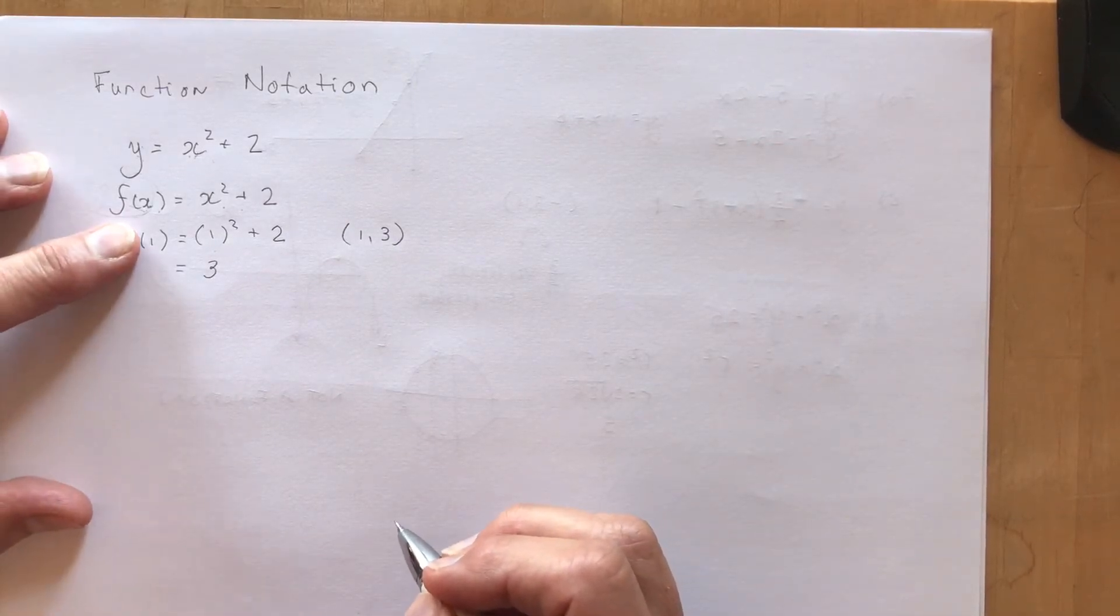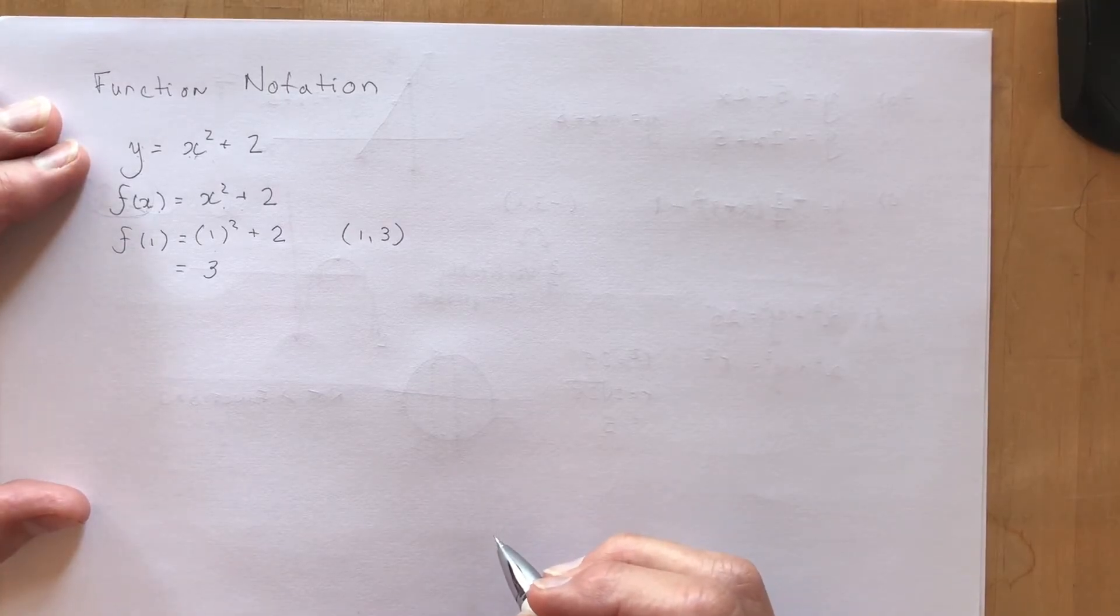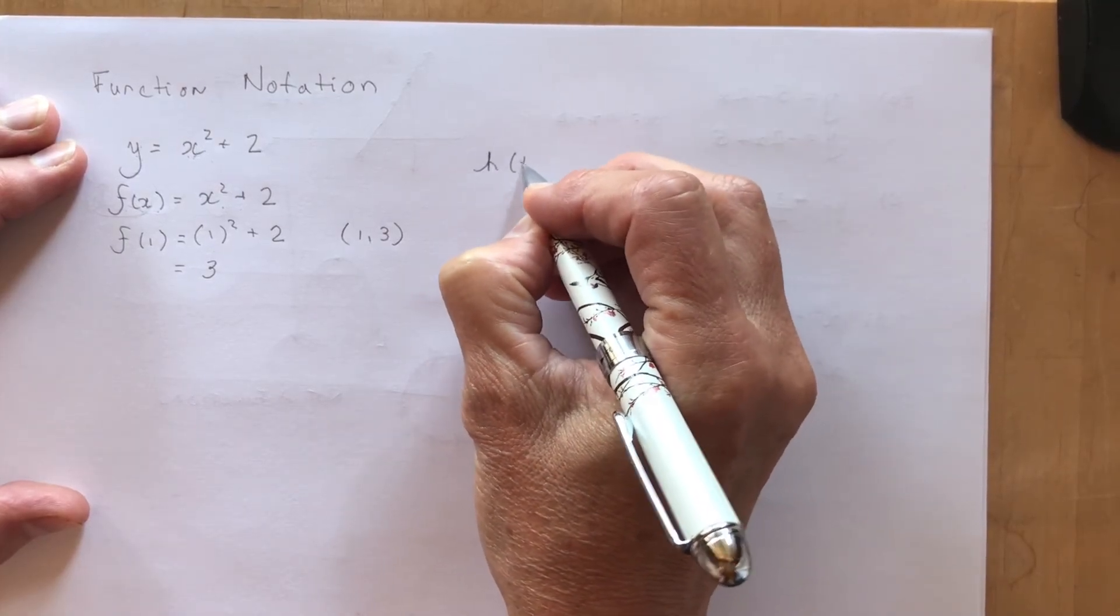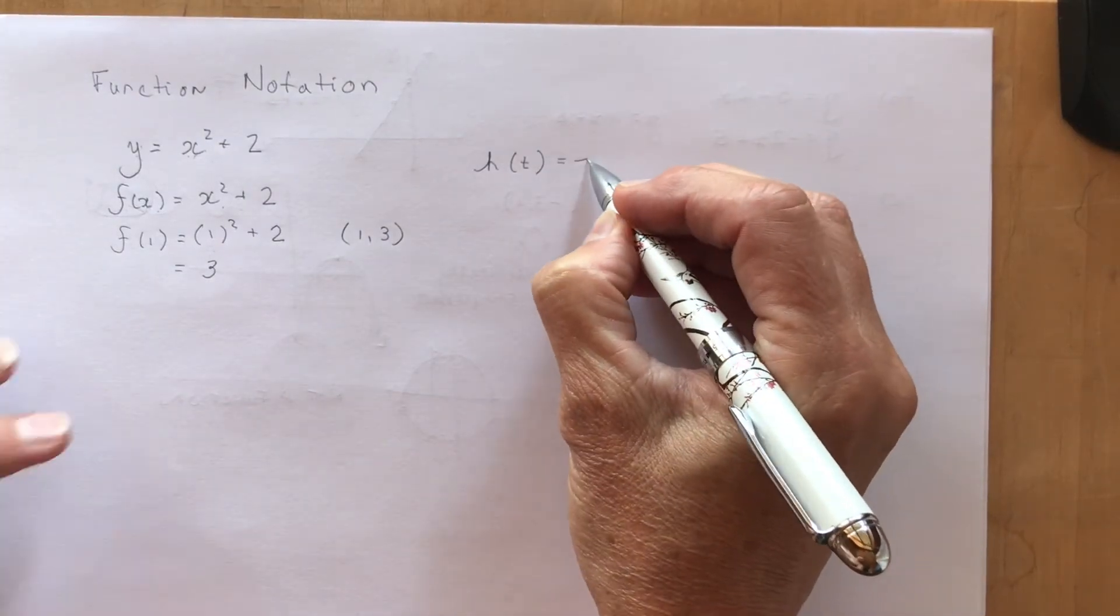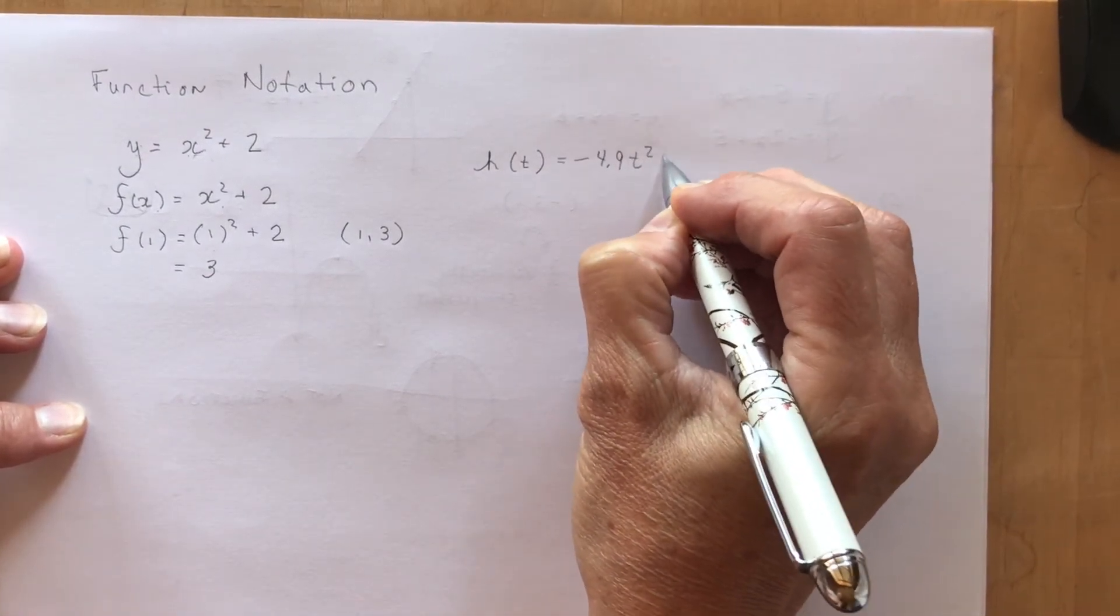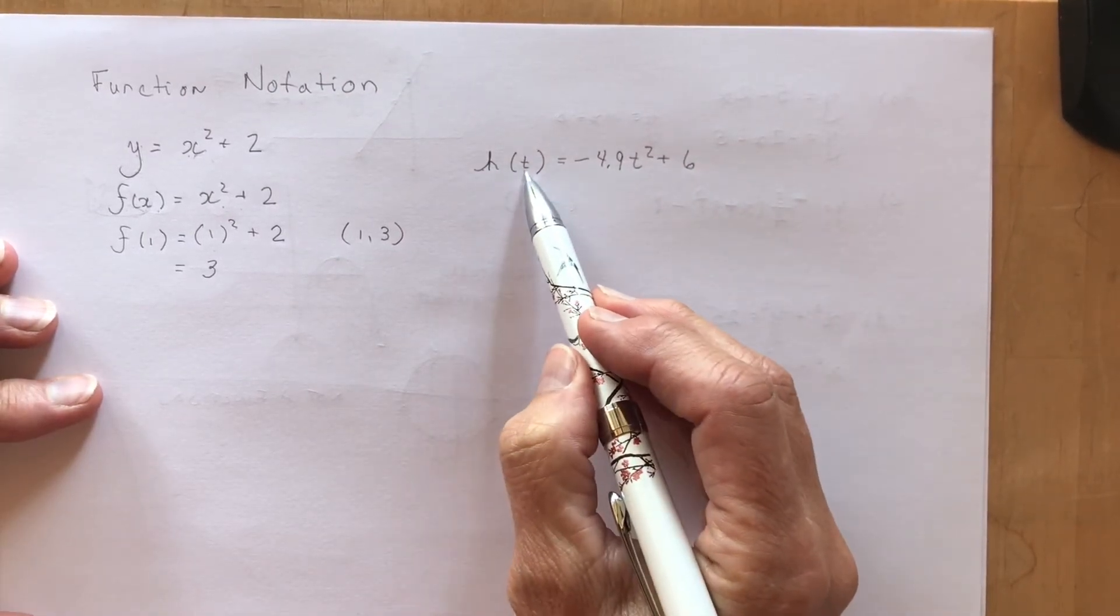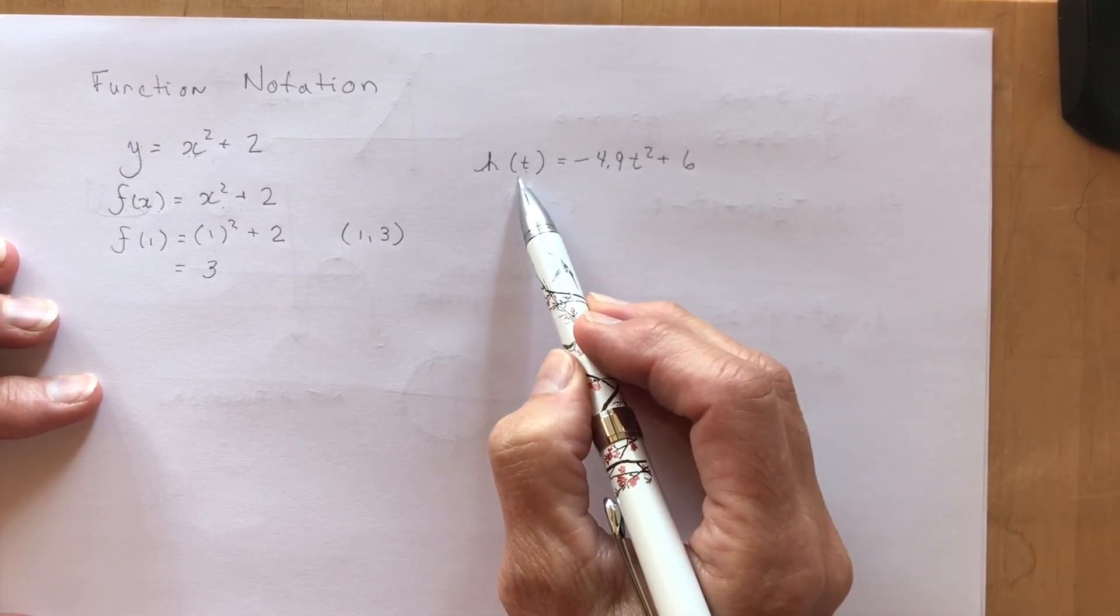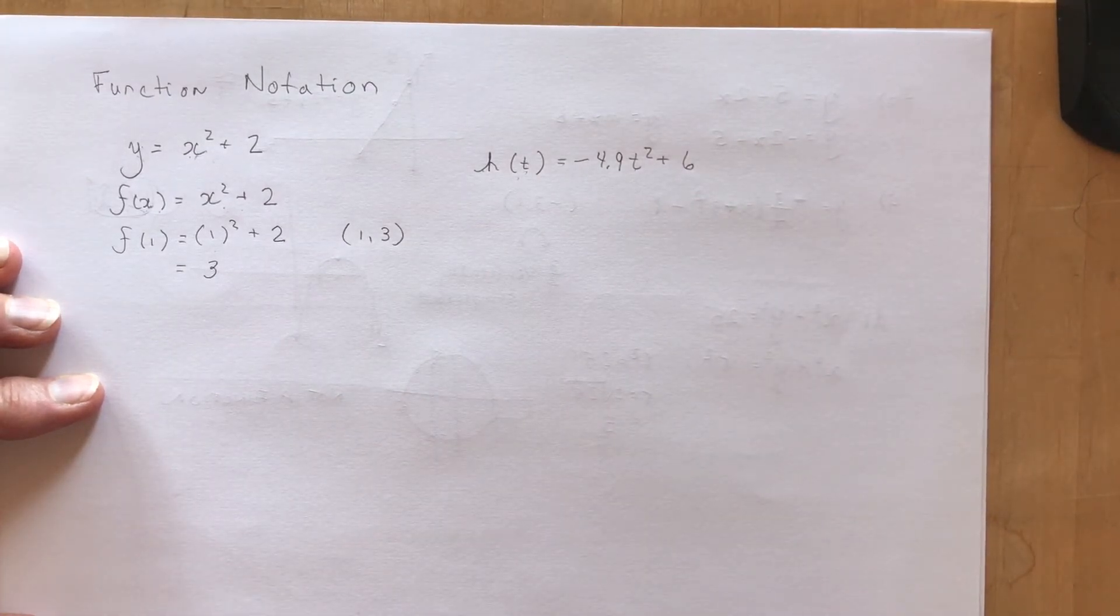So f at 1 is 3 and I could use those coordinates (1, 3) to graph the function. Now it's not always f at x, they do change them around. You can have g at x, h at x. Often you'll see things like h at t, especially when they're talking about a height of a function. So it'll say what is the height at a certain time? So you plug in the time, you find the height.